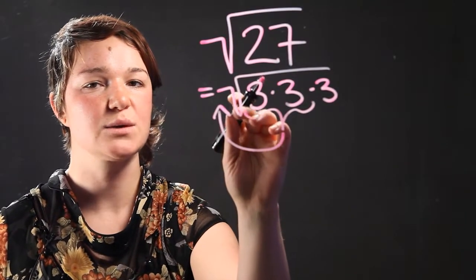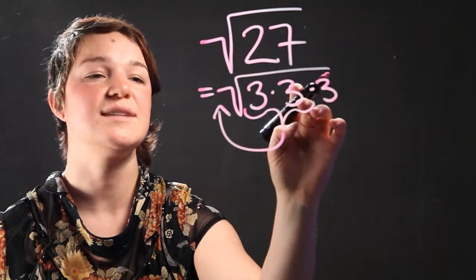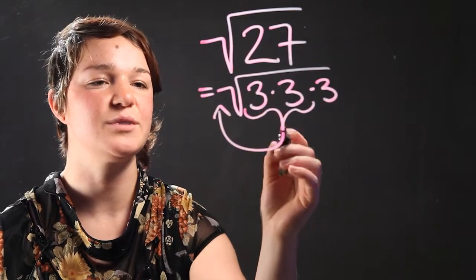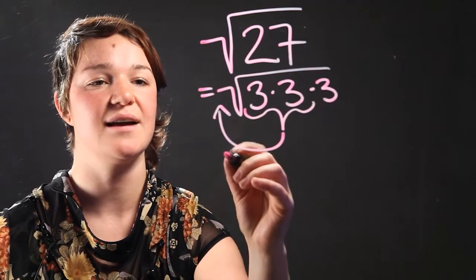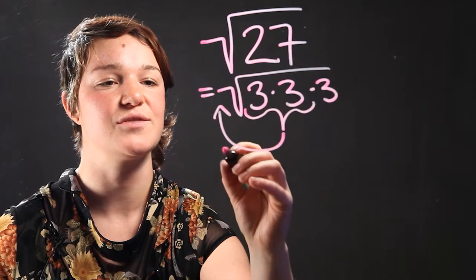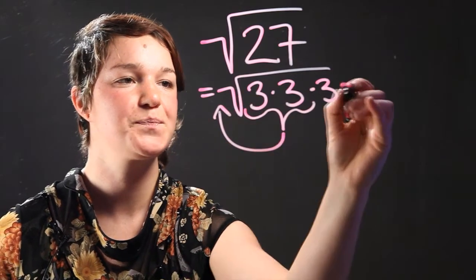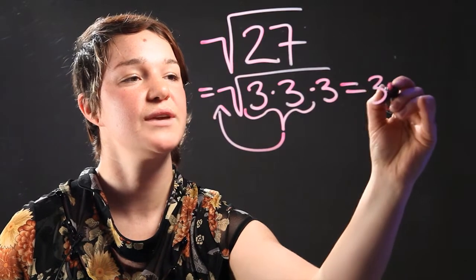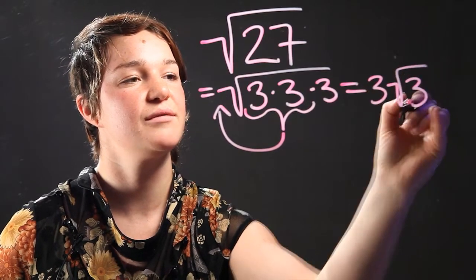So when you take the square root of a number times itself, it's going to simplify to that number outside of the radical expression. So this is going to be equal to 3 square root of 3.